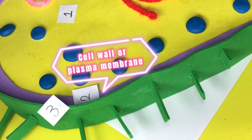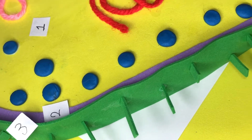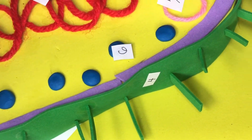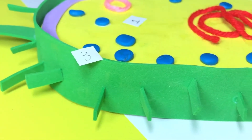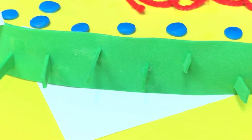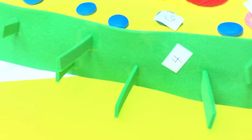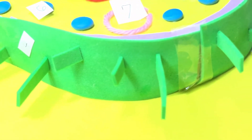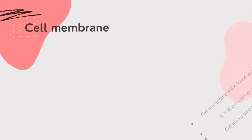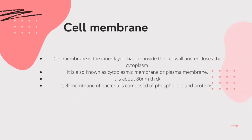Next is the cell wall or plasma membrane. It is an important structure of a bacteria — it gives shape to the organism. On the basis of cell wall composition, bacteria are classified into two major groups: Gram-positive and Gram-negative. Also, the cell membrane is the inner layer that lies inside the cell wall and encloses the cytoplasm. It is also known as cytoplasmic membrane or plasma membrane. It is about 80 nanometers thick, and is composed of phospholipid and proteins.